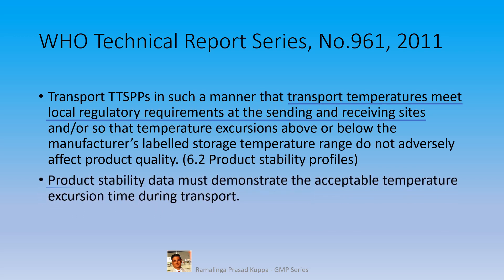Product stability data must demonstrate the acceptable temperature excursion time during transport. This is important. It may not be possible to maintain exact conditions — some excursions may be accepted, but the excursions must be within the guideline requirement. The guideline says that the average mean kinetic temperature should be within the specification in data from the last 24-hour period. For more details, you may please refer USP chapter 1079. It is important to differentiate between absolute temperature excursions and the mean kinetic temperature.